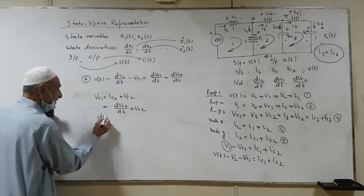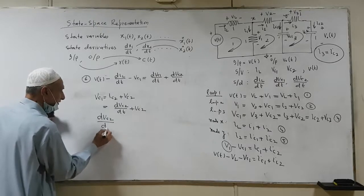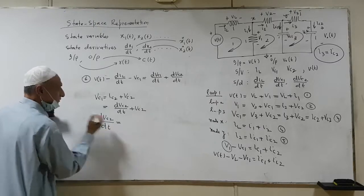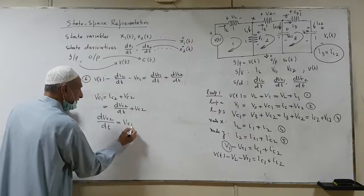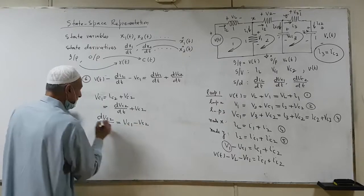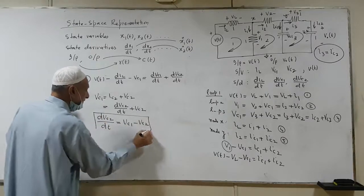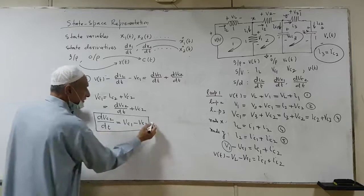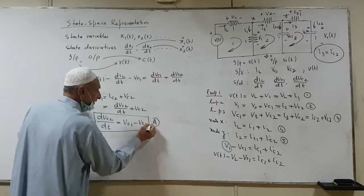That is c dVc2 by dt plus Vc2. So I can say that dVc2 by dt is equal to Vc1 minus Vc2. So I have got one of the state equations. I'll call this one as A.